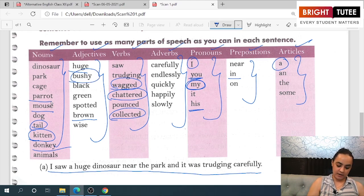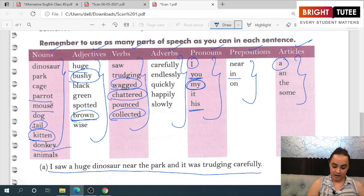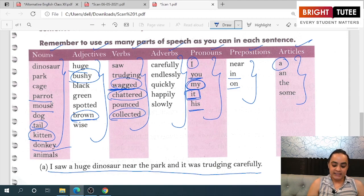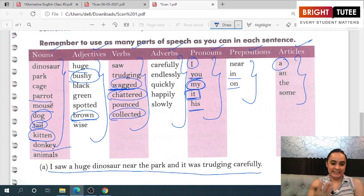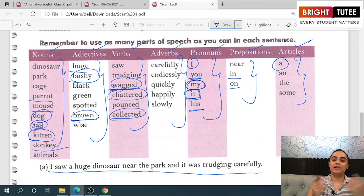'...bushy brown eyes or bushy brown tail which it keeps wagging happily on seeing a dog.' So my kitten has a bushy brown tail which it wagged happily on seeing a dog.